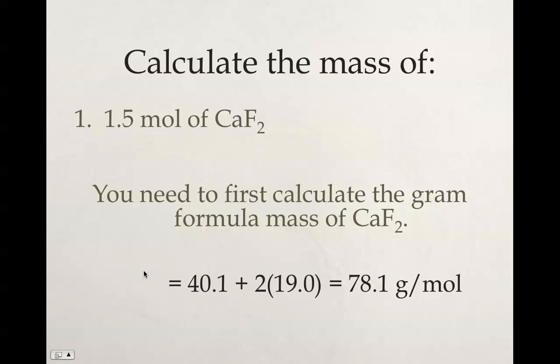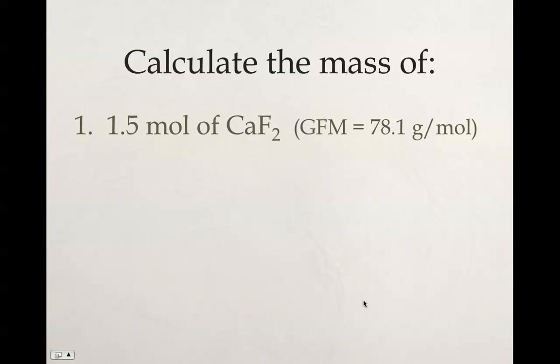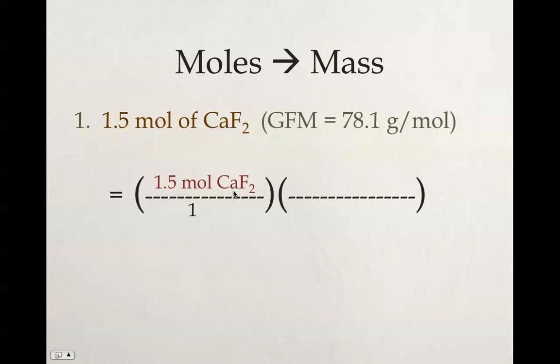Now we're going to simply go the opposite way. Even though we're starting with moles, we still need to calculate our GFM of the calcium fluoride, which is 78.1 grams per mole. Now that we have both pieces of information, we start with what we're given, which in this case is 1.5 moles of calcium fluoride.